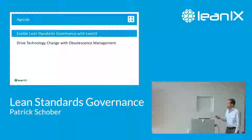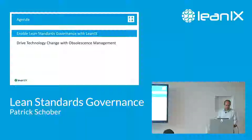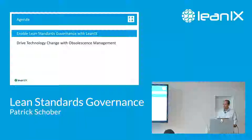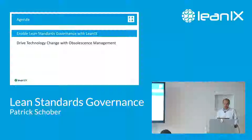The first part is enabling standards governance in LeanIX — what you need to do and what information you need. The second part covers more business-related topics like risk management and especially obsolescence management, which are the drivers for change and can get the ball rolling so you have a chance to get deeper into applying the standards you've set or newly discovered.